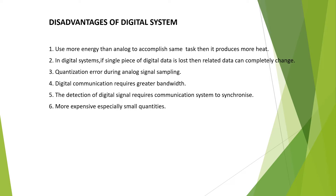Coming to the disadvantages: the real world is analog — for example, voice is analog — so processes like quantization and sampling are required. Quantization errors are a major problem in digital systems. Also, since all data is represented as 1s and 0s, if even a single bit is lost, the whole stream of information can be corrupted. This is one of the key disadvantages, which is why we have parity checking and similar error-detection methods.